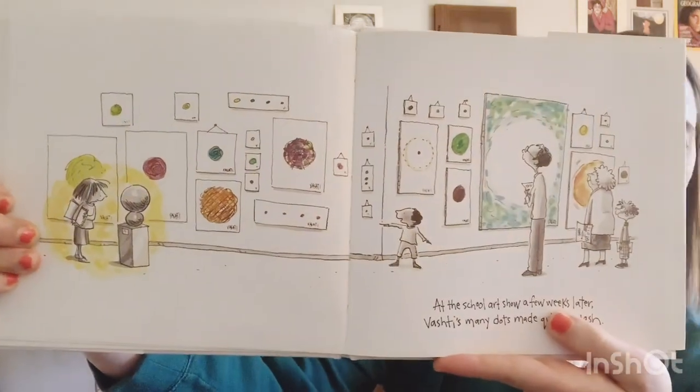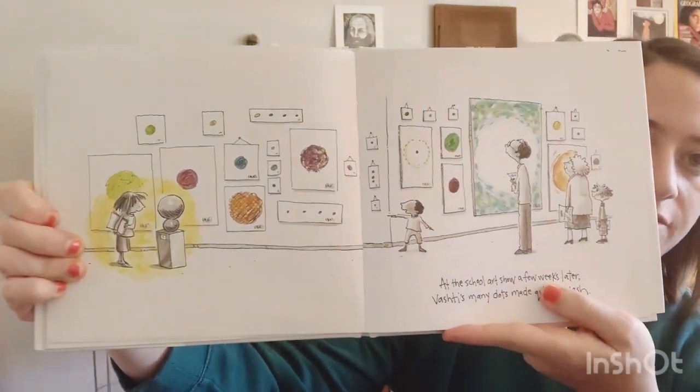And in the art show all of her dots are hung up for everyone to see. So we're not just making one work of art today. We're going to make a bunch of different versions of our artwork so that we can have our own mini art show in our house. So let's get started.